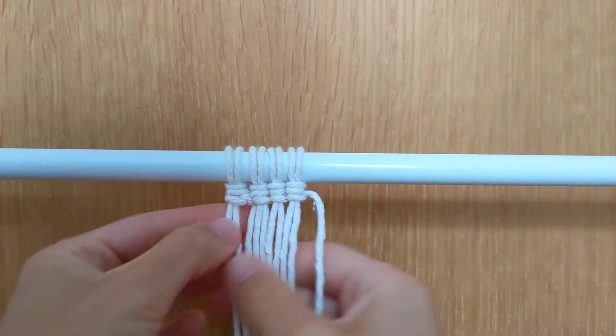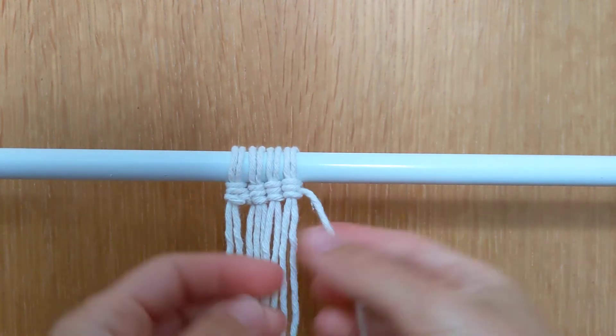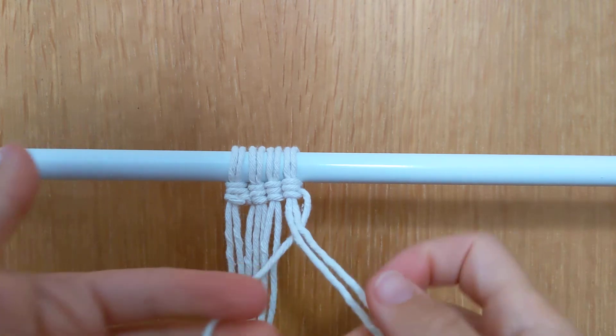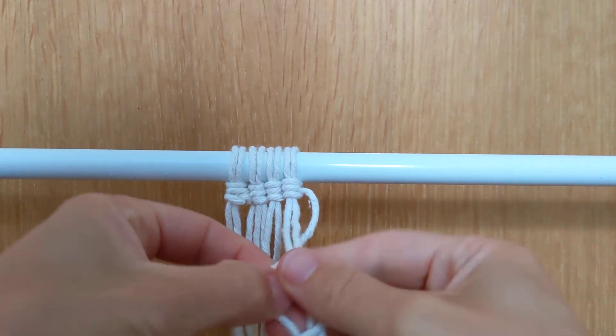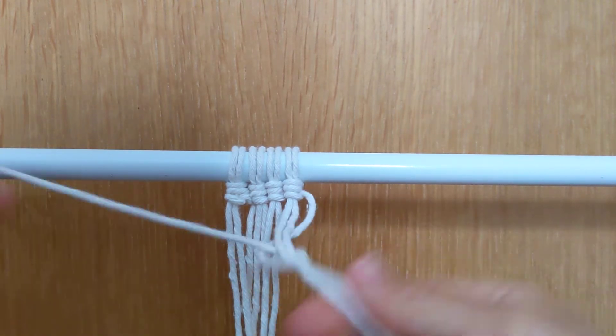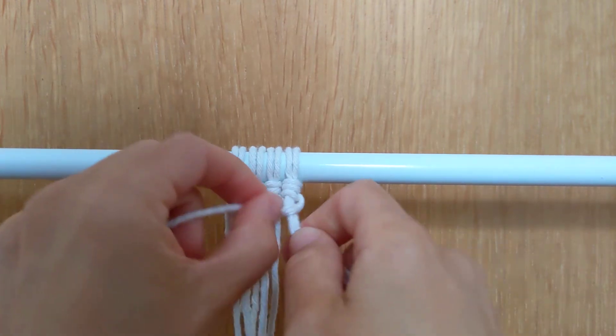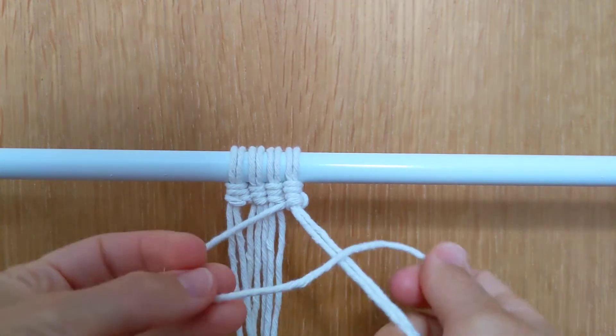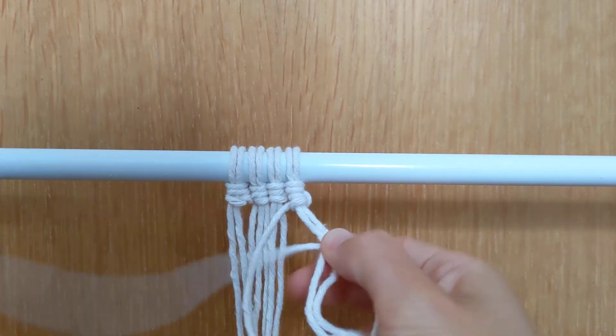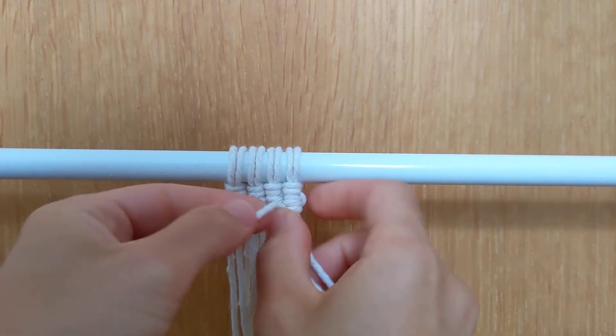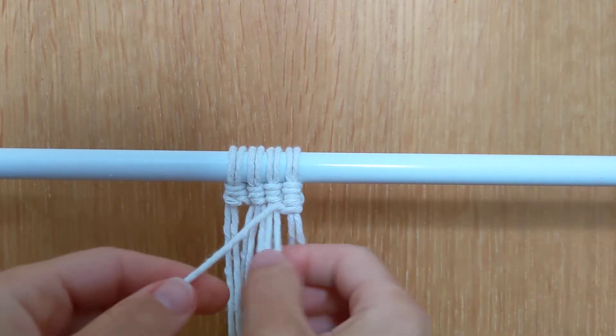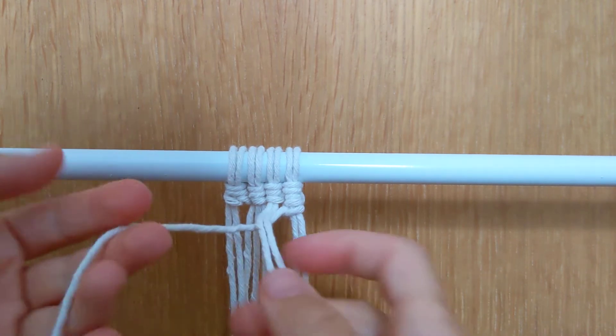And now I'm going to come back around. Taking my first set, I'm going round the back, round the front, and through the loop. Round the front, round the back, and through the loop, just repeating the same on each one.